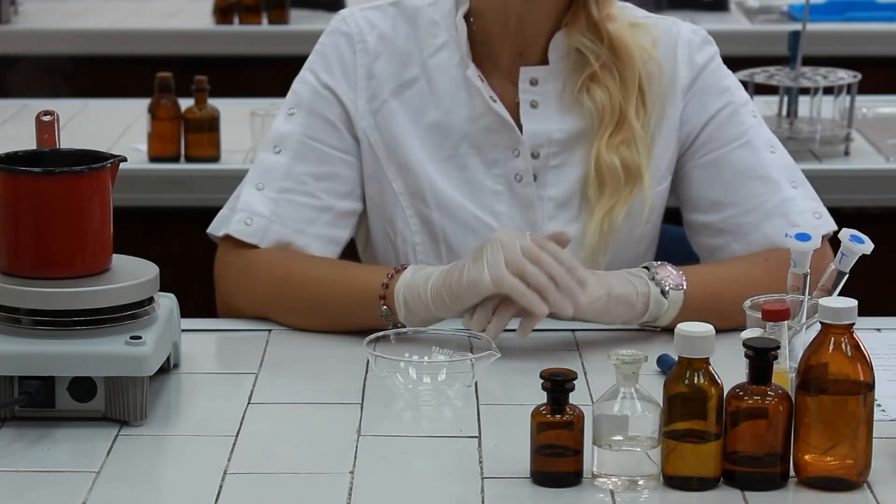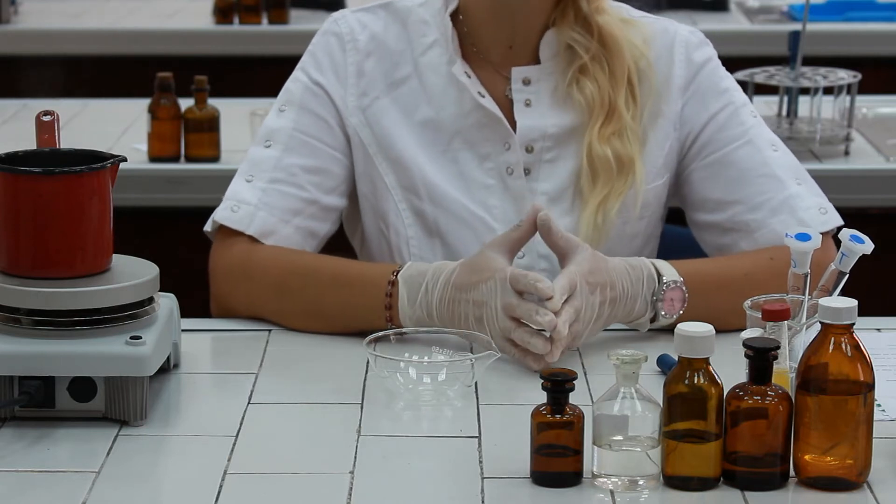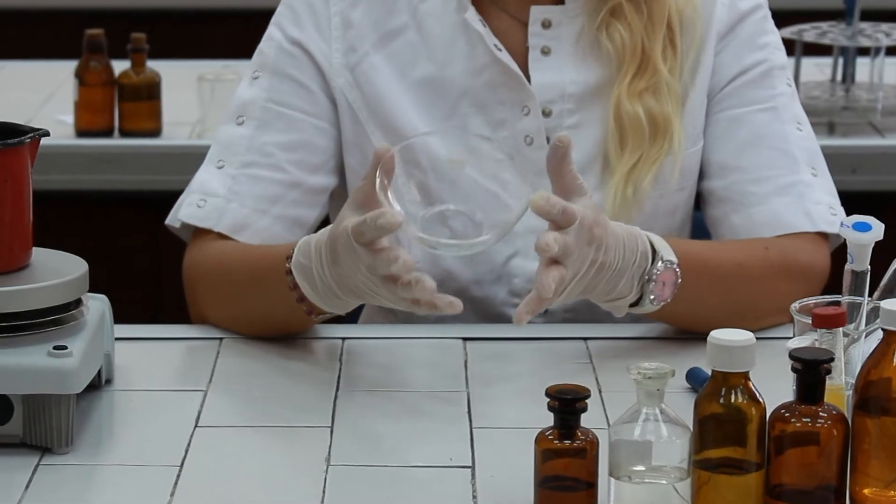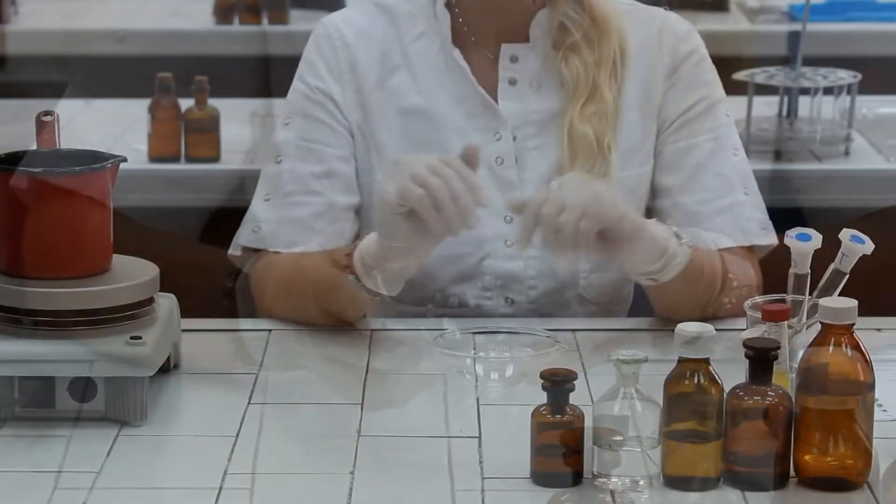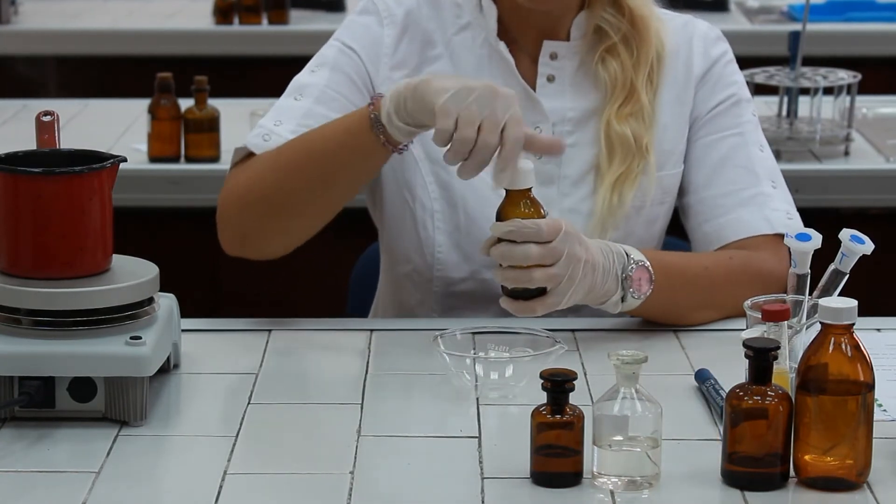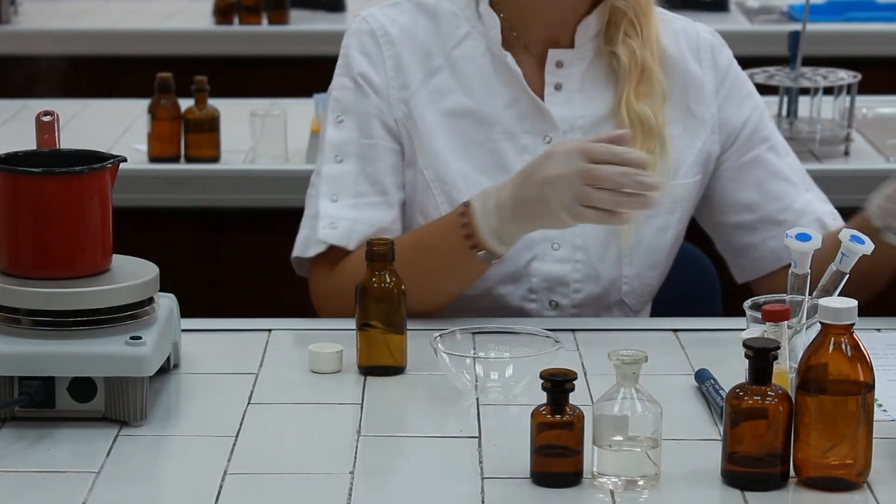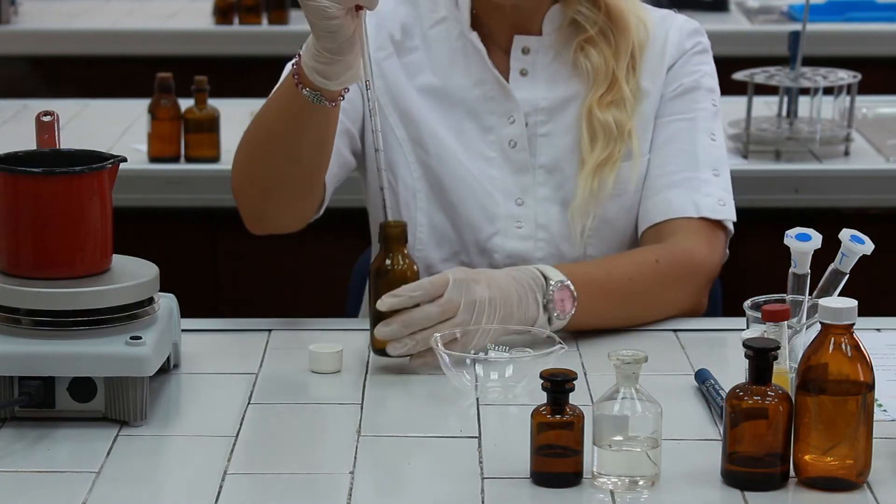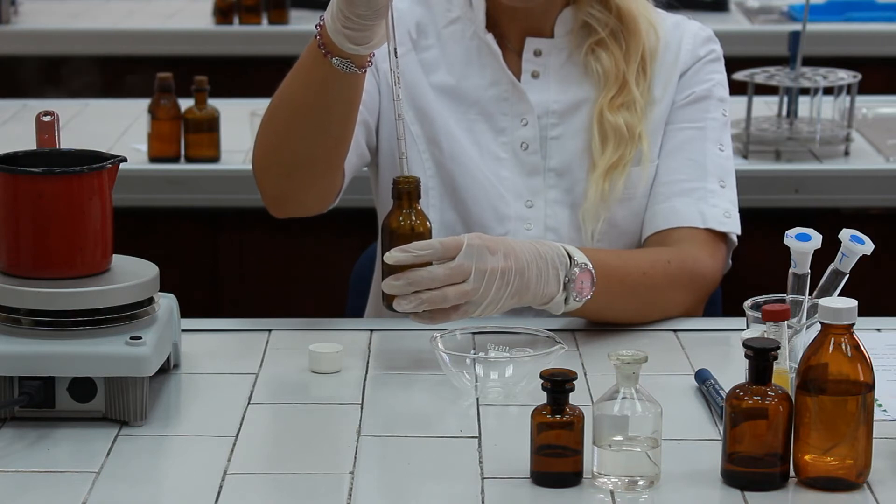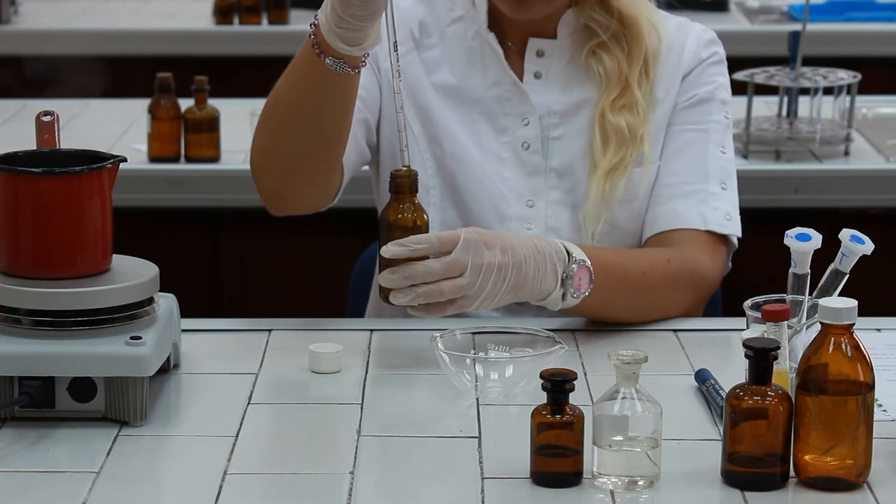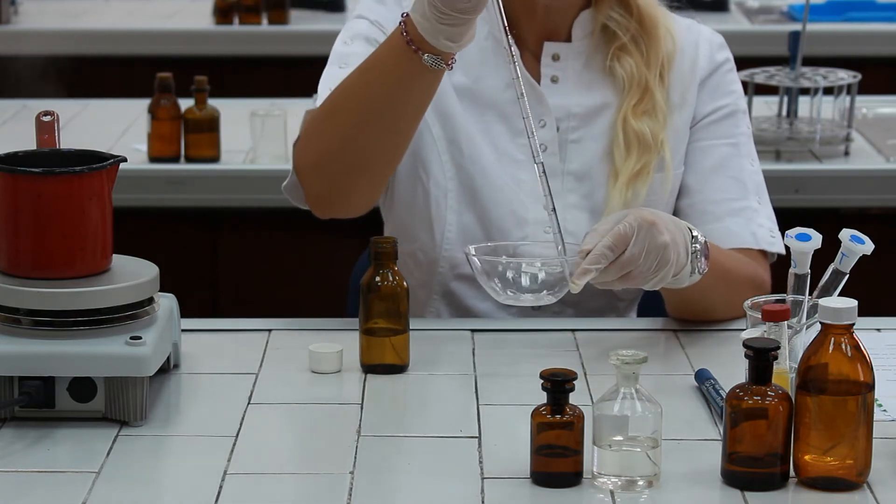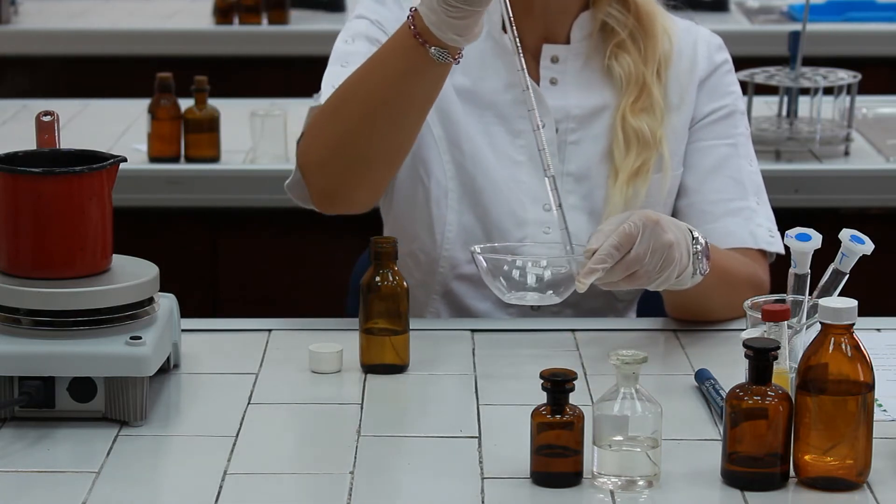The next step in procedure is to prepare the chloroform solution of the extracted cholesterol which is concentrated here in evaporating dish. In order to do this we are going to pipette three milliliters of chloroform into the dish by rinsing the walls of the dish at the same time.